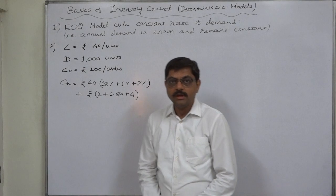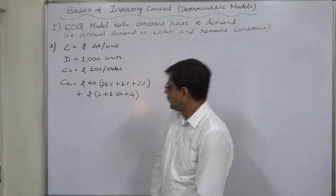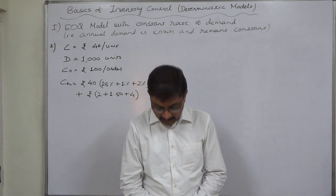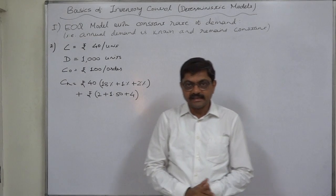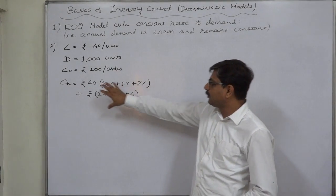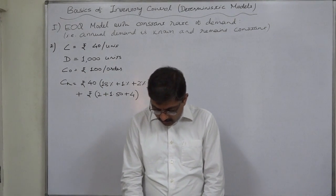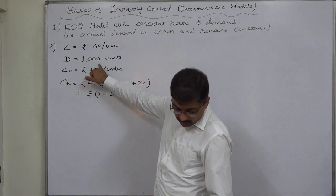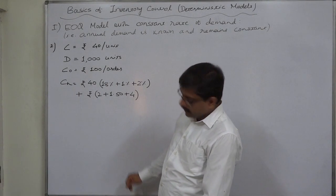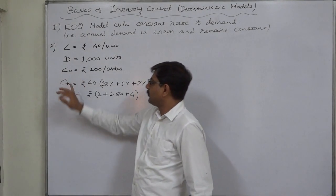The carrying or holding cost has not been given as a single item — the practical approach is that total six items are there which can be classified as holding or carrying cost. We will have to calculate the carrying cost or holding cost. As a student, be careful — if we make any error in calculation of CH, all the answers will be wrong. The annual demand is constant at 1000 units and the total cost associated with placing each order is rupees 100. So we have all three components: D, CO, and CH.